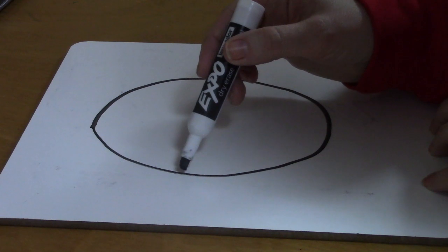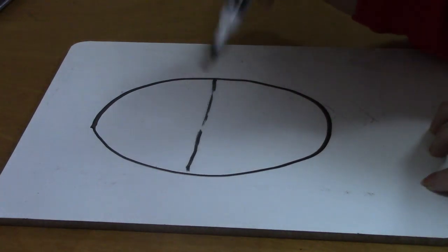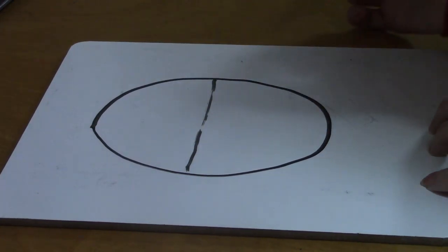After we draw the oval, you draw very, very lightly a line that goes in the center of that oval. And that line tells us where we're going to put our eyes.